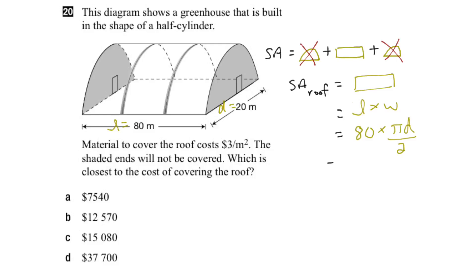Therefore, we can put all our pieces together here. We've got 80 times π, which is 3.14 times the diameter, which is 20, all divided by 2.